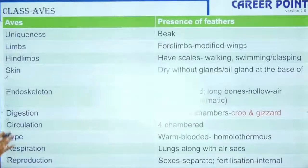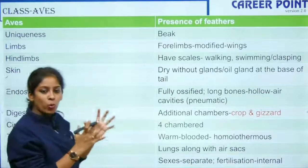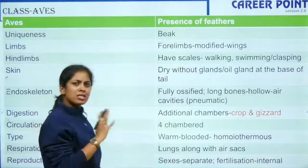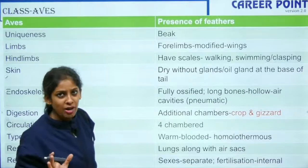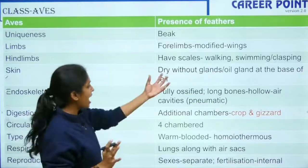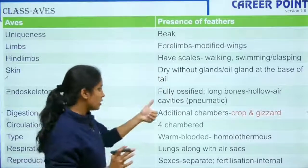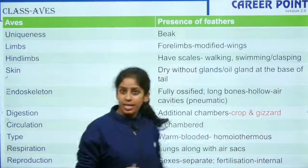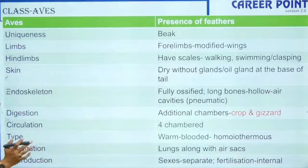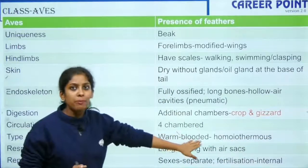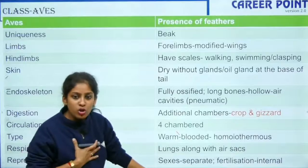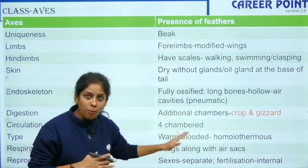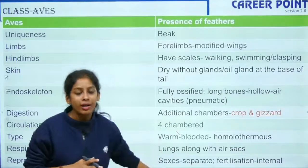Coming to birds — Class Aves. Birds have wings and a beak, which are the two identifying structures. Their skin is mostly dry without glands, but they have an oil gland at the base. They have air cavities, and a crop and gizzard for digestion. Birds are the first class that is warm-blooded, but they still lay eggs.